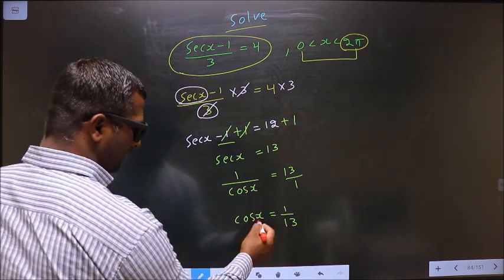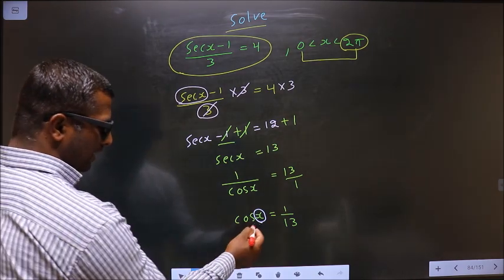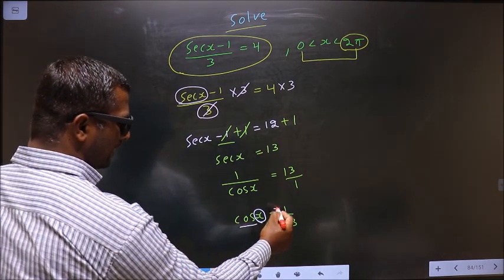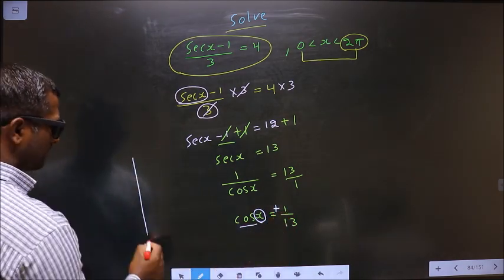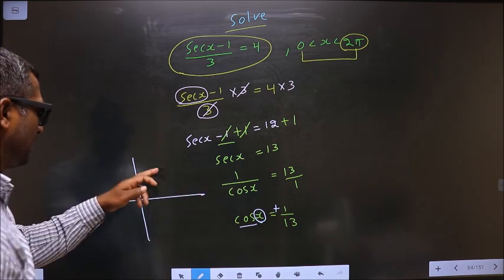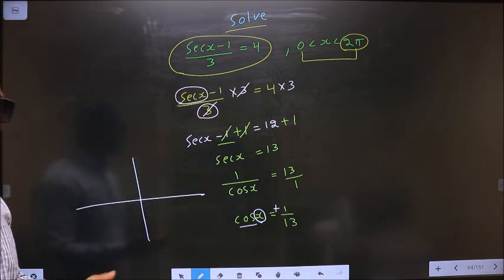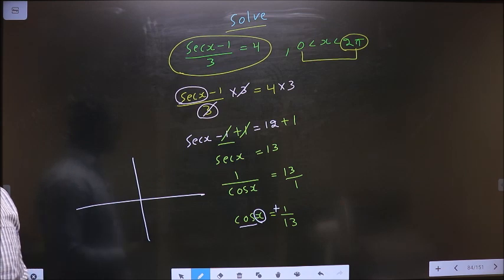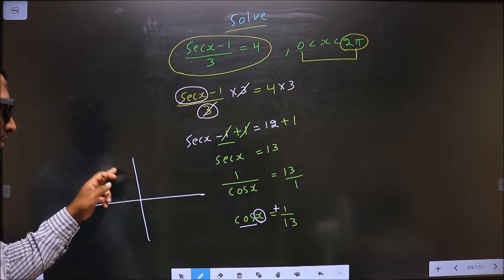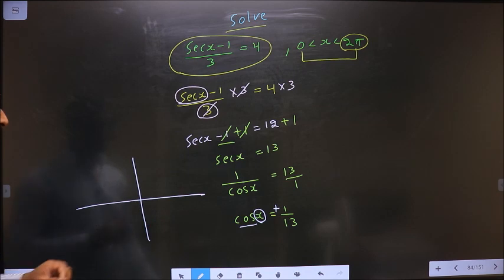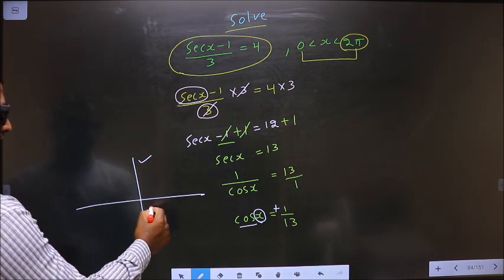Now to get the values for x, here we have cos and it is positive. So now you check in what all quadrants is cos positive. It is all silver tea cups. Cos is positive in the first and in the fourth.